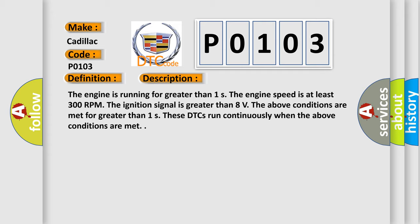The engine speed is at least 300 RPM. The ignition signal is greater than 8 volts. The above conditions are met for greater than 1 second. These DTCs run continuously when the above conditions are met.